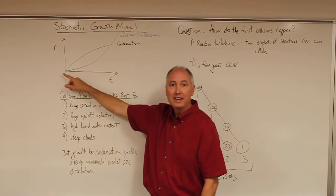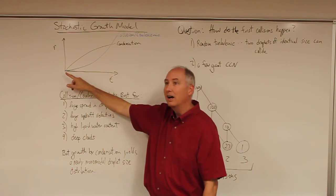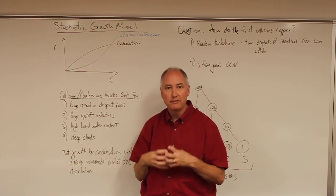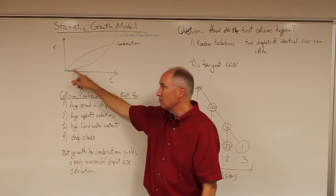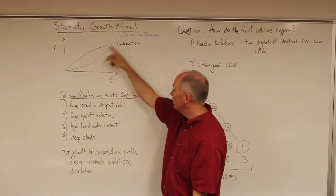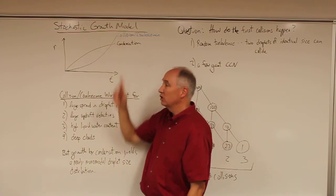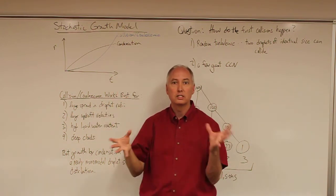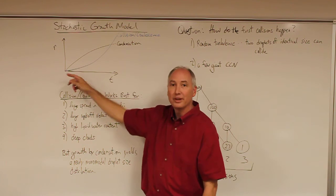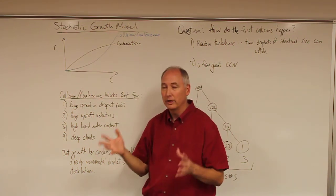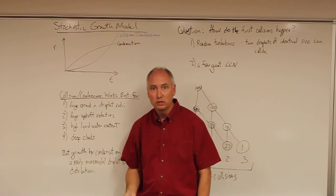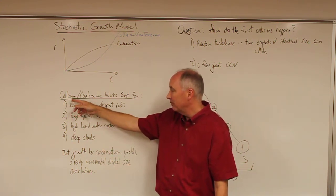The collision coalescence mechanism is extremely slow at the beginning, in part because the collision and coalescence efficiency of small droplets is relatively small. Also, most of the droplets are about the same size due to growth by condensation, and the collision coalescence mechanism requires a large collector droplet relative to the population of droplets it is going to be collecting. So you have these disparate needs: condensation grows things quickly but creates a monomodal distribution.